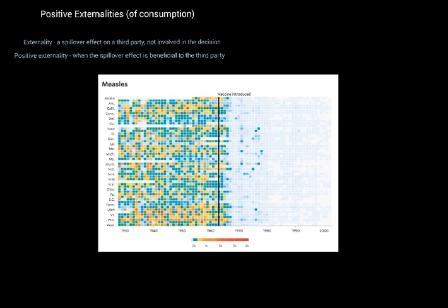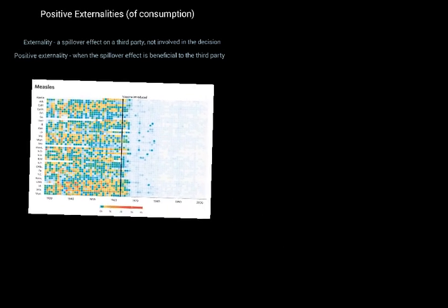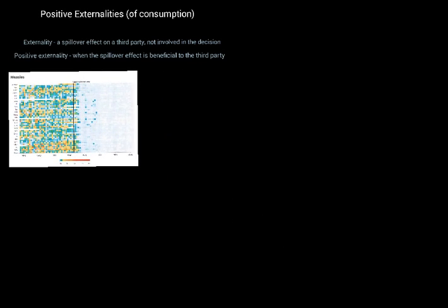Obviously, by the act of somebody becoming vaccinated against measles, it's less likely that they themselves are going to contract the disease. But when thinking about the externality, we're more interested in the impact it has on other people. This brings us to the concept of herd immunity, which is really important when thinking about vaccination.